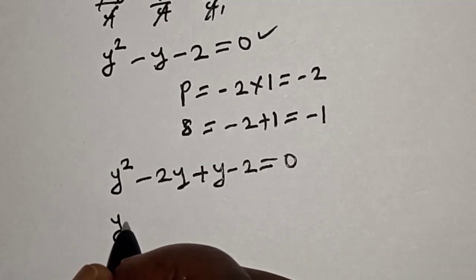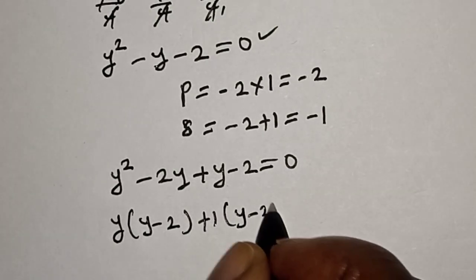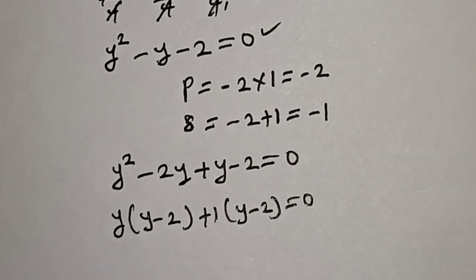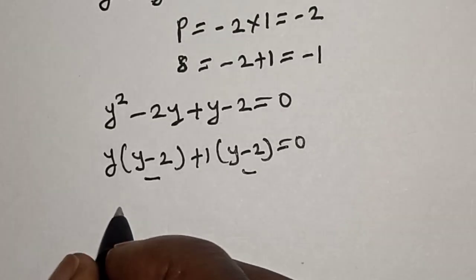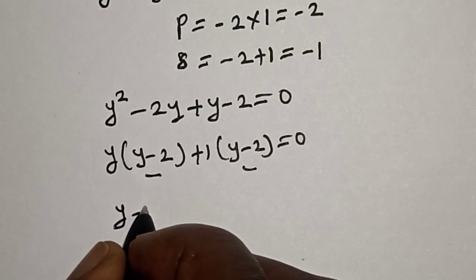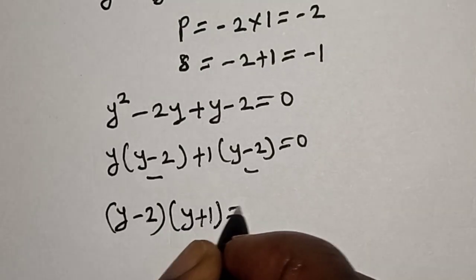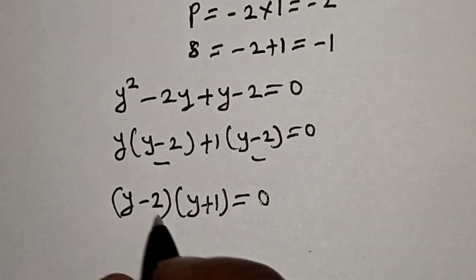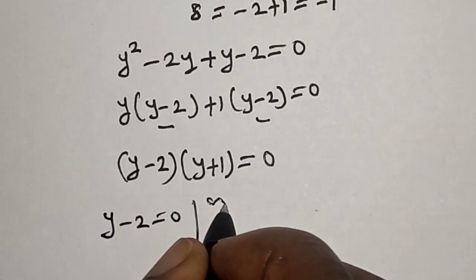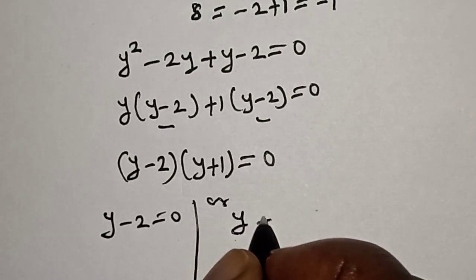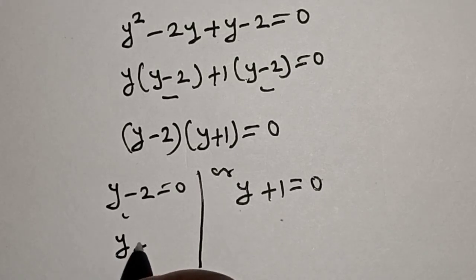Factoring: y(y minus 2) plus 1(y minus 2) is equal to 0. Since (y minus 2) is common, we factor it out: (y minus 2)(y plus 1) is equal to 0. There are two cases: y minus 2 = 0, giving y = 2, or y plus 1 = 0.